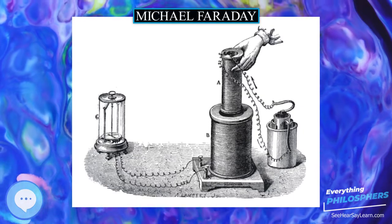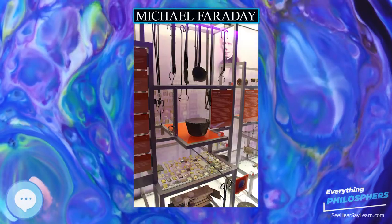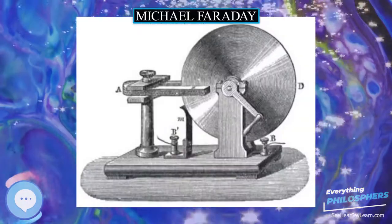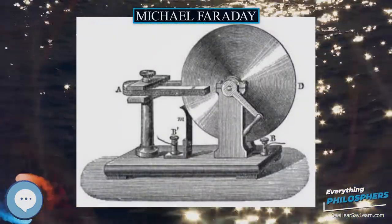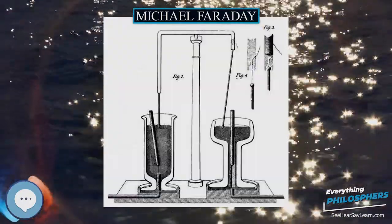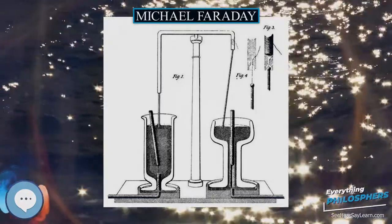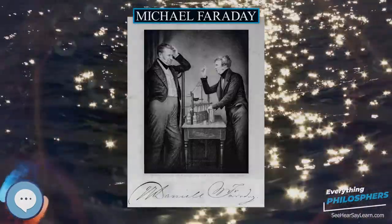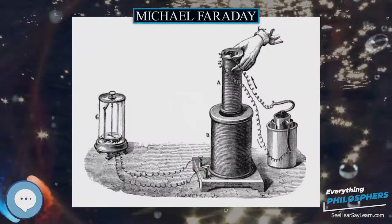As a chemist, Faraday discovered benzene, investigated the clathrate hydrate of chlorine, invented an early form of the Bunsen burner and the system of oxidation numbers, and popularized terminology such as anode, cathode, electrode, and ion. Faraday ultimately became the first and foremost Fullerian Professor of Chemistry at the Royal Institution, a lifetime position.